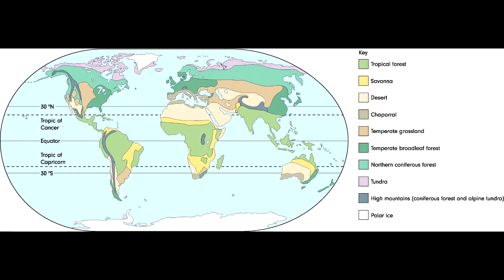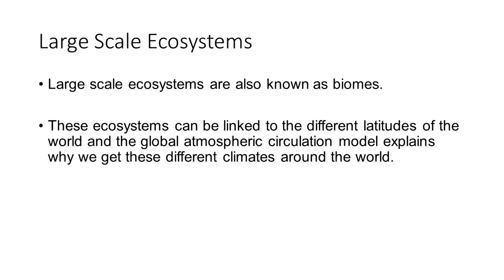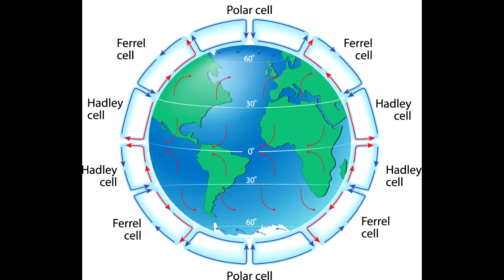Large scale ecosystems we see around the world are also known as biomes. These ecosystems can be linked to the different latitudes of the world, and the global atmospheric circulation model we previously looked at explains why we get these different climates around the world.